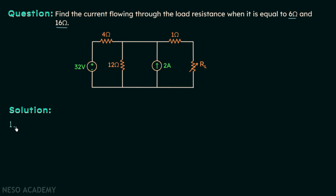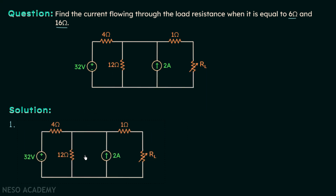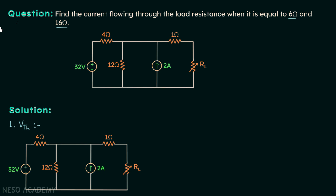To find the Thevenin's equivalent circuit we need VTH and RTH. First we will find Thevenin's voltage VTH. We will remove the load resistance and open circuit that branch, because VTH is the open circuit voltage between the two terminals. Always take and keep the polarity consistent — do not reverse the polarity in the equivalent circuit.